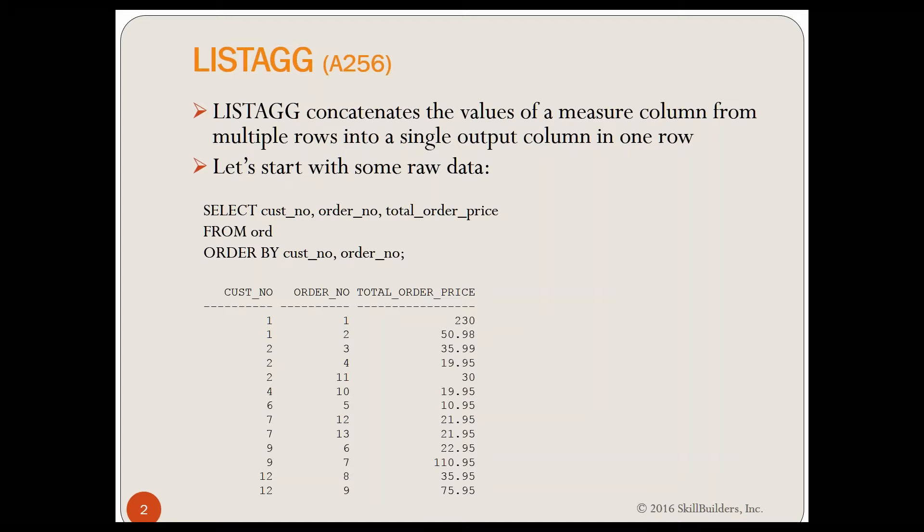What LISTAGG is going to do is it's going to take some column that would normally be listed if you show detailed data. The problem is when you do a GROUP BY, you're grouping by certain columns, but the other columns are lost. The data from the other columns are lost.